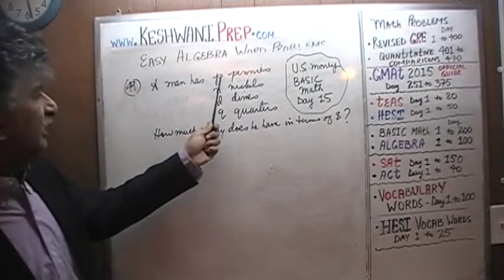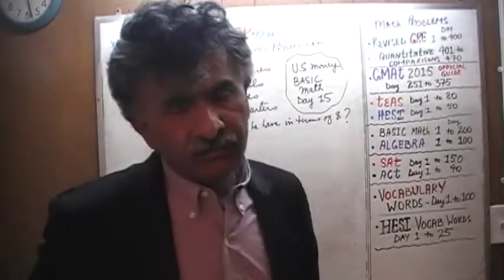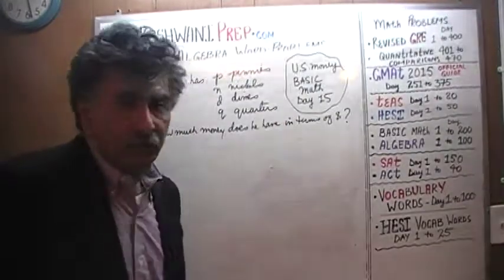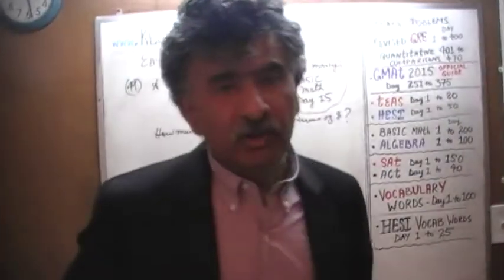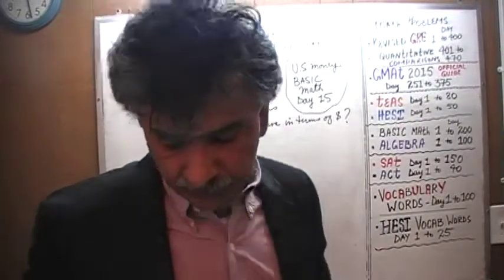Watch that video first in the event that you are not familiar with any of these terms here. The question is, a man has a certain number of pennies, some nickels, some dimes, and some quarters. How will we express this amount of money that he has in terms of dollars? Let's get going.